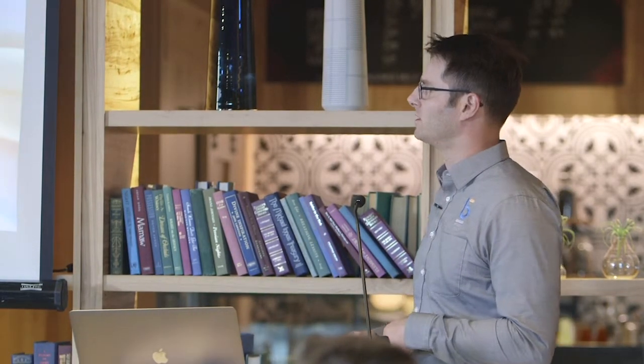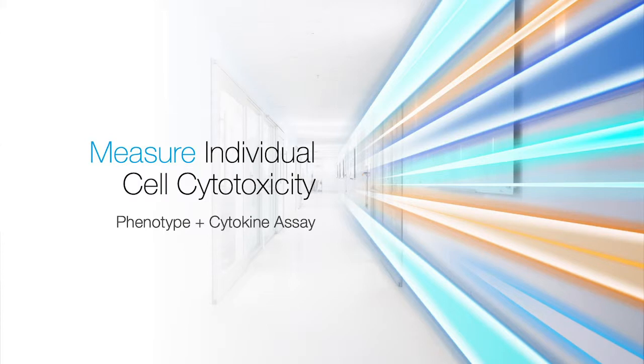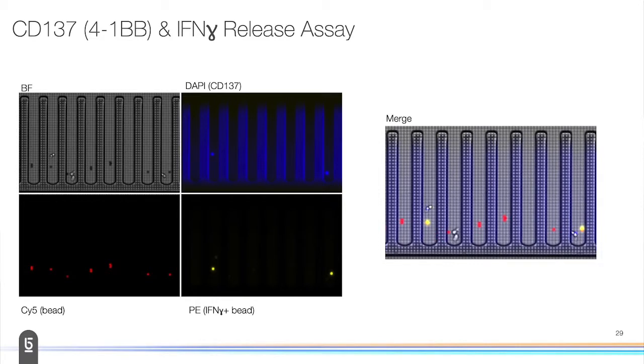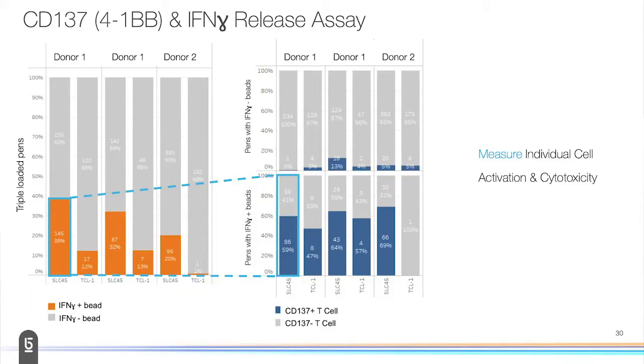That was our first kind of interferon gamma assay. Then we started layering things on top, like phenotyping the T cells themselves. Here, what we're doing is not only the same setup with the interferon gamma bead, but we're now adding an anti-CD-137 stain, so looking for 4-1BB. Now we're looking at not only is it expressing a marker of activation on the surface, but also it's activating and expressing interferon gamma. We'll see yellow if there's interferon, and we'll see blue if it's CD-137 positive. On the right, you've got an interaction here that's blue on the T cell and yellow on the interferon assay. It's a little bit hard to see. Then you've got an interaction here where there's no CD-137 and there's no interferon being secreted.